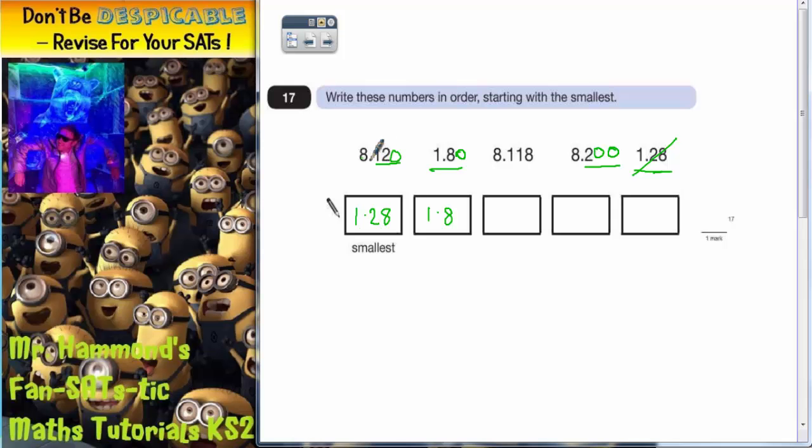So now they all begin with 8, so we can just look at the digits after the point: 0.120, 0.118, 0.200.